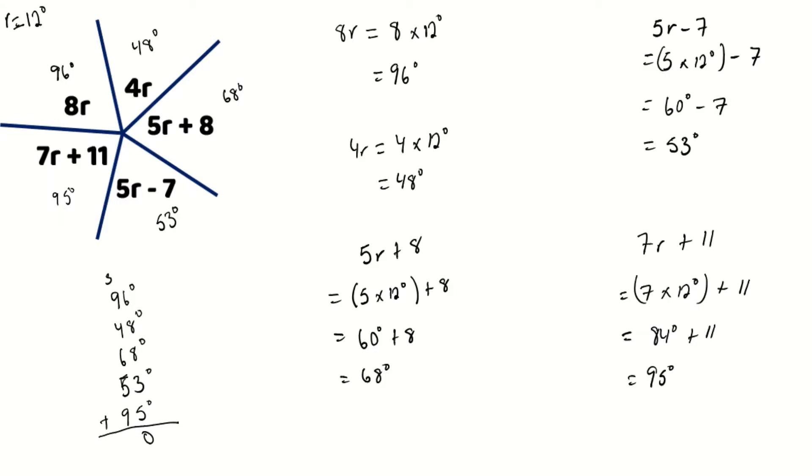9 plus 5 is 14, 14 plus 6 is 20, 20 plus 4 will give us 24, 24 plus 9 will give us 33, and 33 plus 3 will give us 36. So we see that when we sum all of these angles up together, they do indeed add up to 360 degrees.